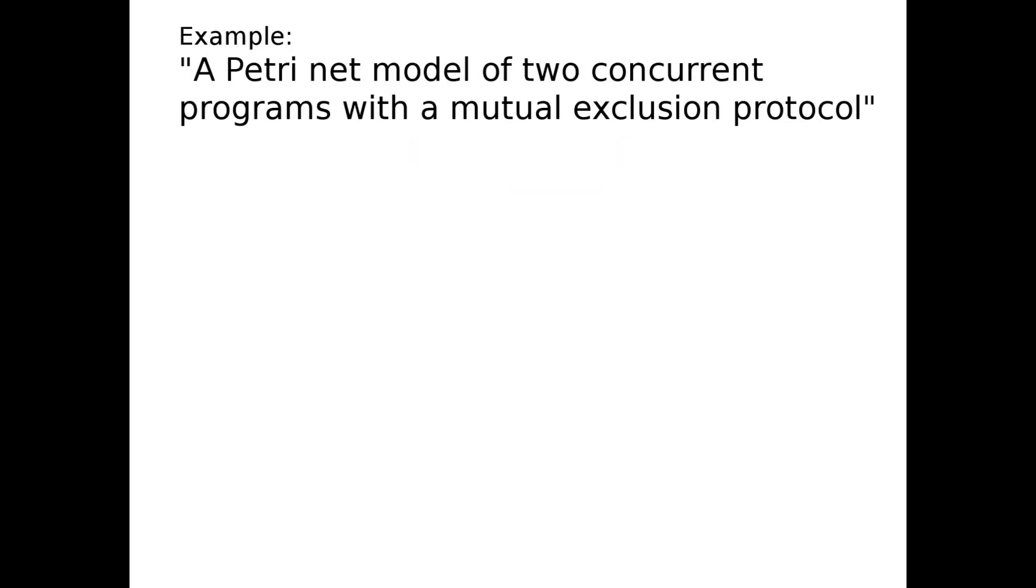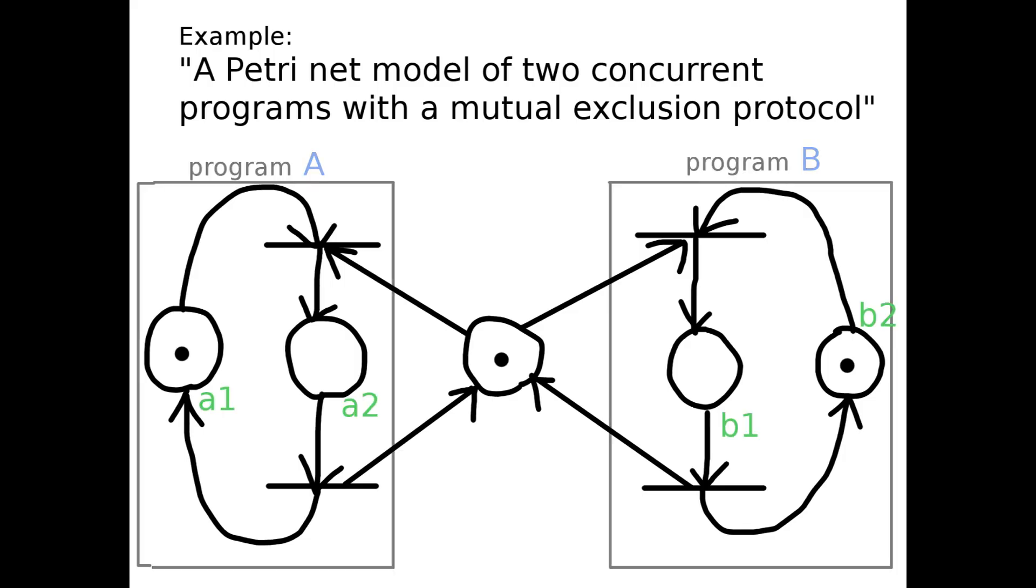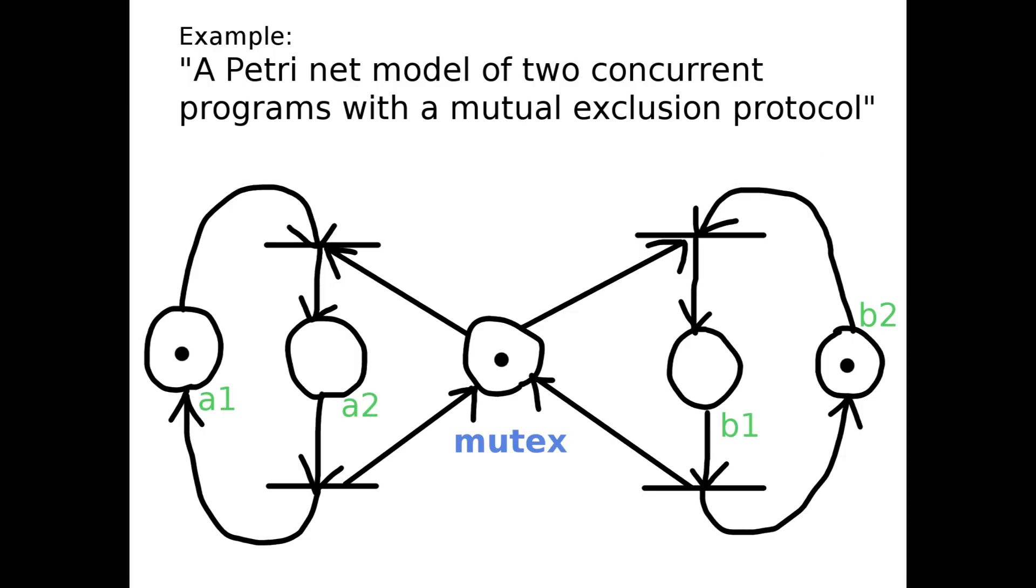Let's look at an example: a Petri net model of two concurrent programs with a mutual exclusion protocol. Each of the two programs has a critical section.